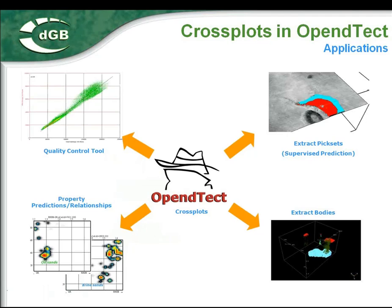There are several applications of this tool inside OpenDetect. It's a very good quality control tool — you have so many attributes to understand the relationships between them. You just cross-plot and see if they give the same meaning or if there is a new relationship, and you can discard redundant seismic attributes. You can also predict seismic objects using supervised neural network prediction, do rock property prediction using Bayesian-based probability density functions, extract geologic bodies, and integrate disciplines like reservoir modeling and understanding reservoir properties.